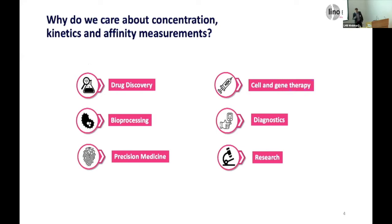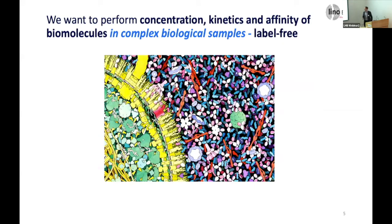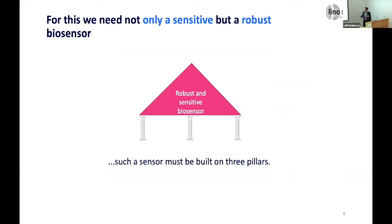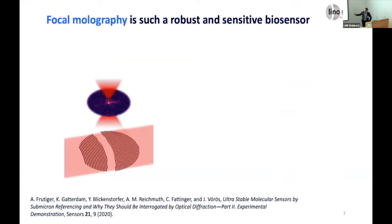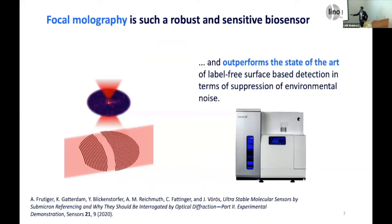Why do we care about concentration, kinetics, and affinity measurements? With these biosensors you measure kinetics, affinity, and concentrations of molecular interactions, which are important in many fields — not only drug discovery and structural biology, but also diagnostics and bioprocessing. The issue is that most biosensors nowadays measure in pure buffers, but biology happens in the complex, crowded environment of cells. We need a robust and sensitive biosensor built on three pillars, and focal monography is such a biosensor that outperforms the state of the art, including the Biacore 8K used for label-free interaction studies.